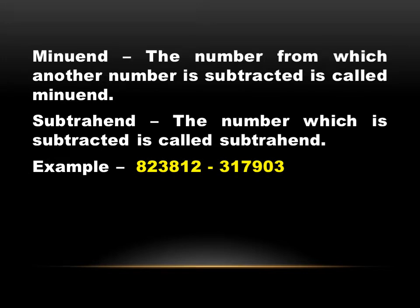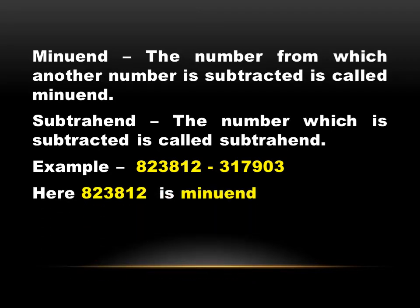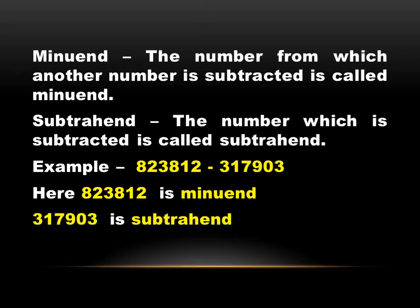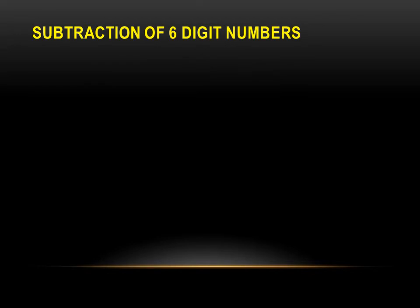Here is an example: eight lakh twenty-three thousand eight hundred twelve minus three lakh seventeen thousand nine hundred three. Eight lakh twenty-three thousand eight hundred twelve is the minuend — this is the number from which another number is subtracted. Three lakh seventeen thousand nine hundred three is the subtrahend — this is the number which is subtracted.